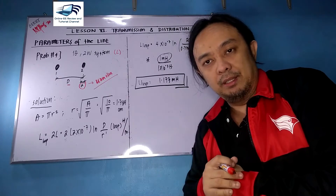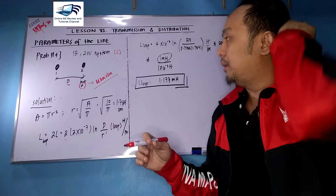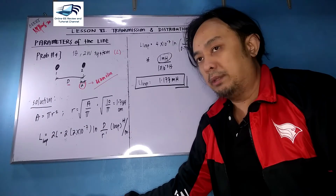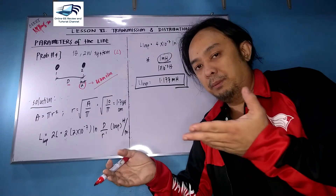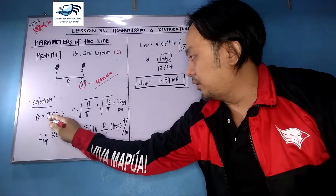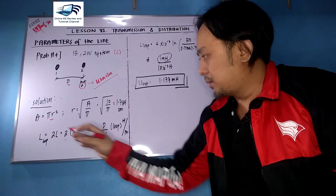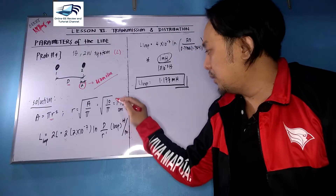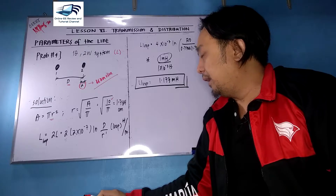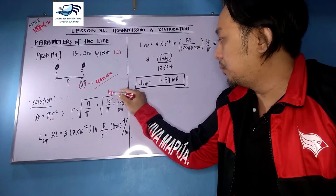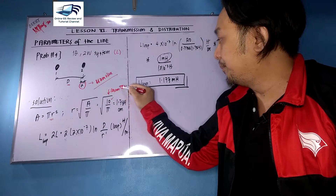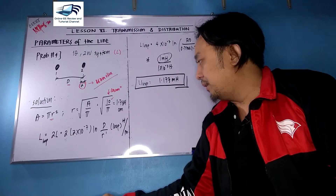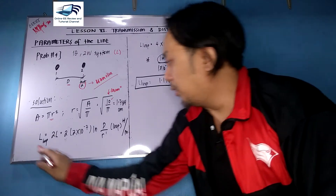The plan of attack is: area equals pi r squared, so radius can be expressed as the square root of area over pi. Since we have 10 centimeters squared as the area from the given, the answer for the radius is 1.784 centimeters.